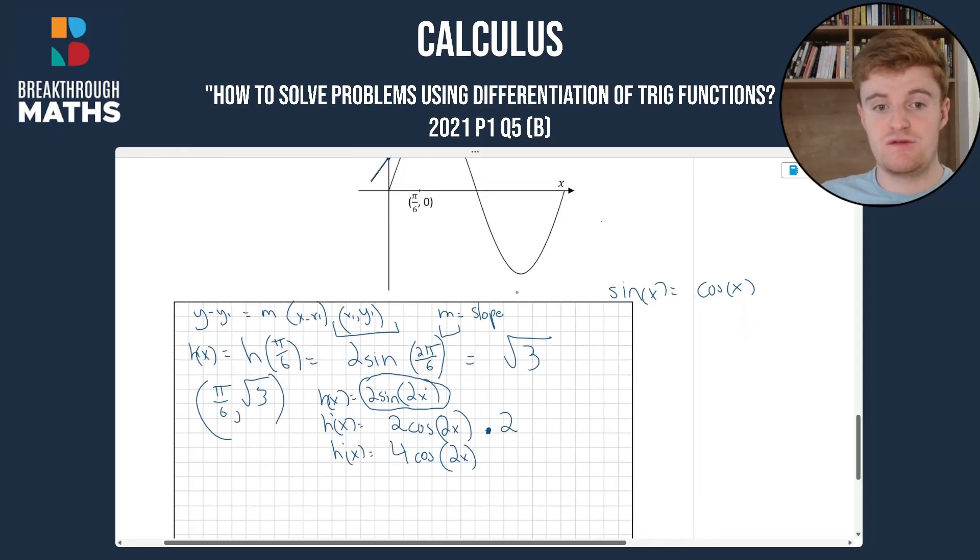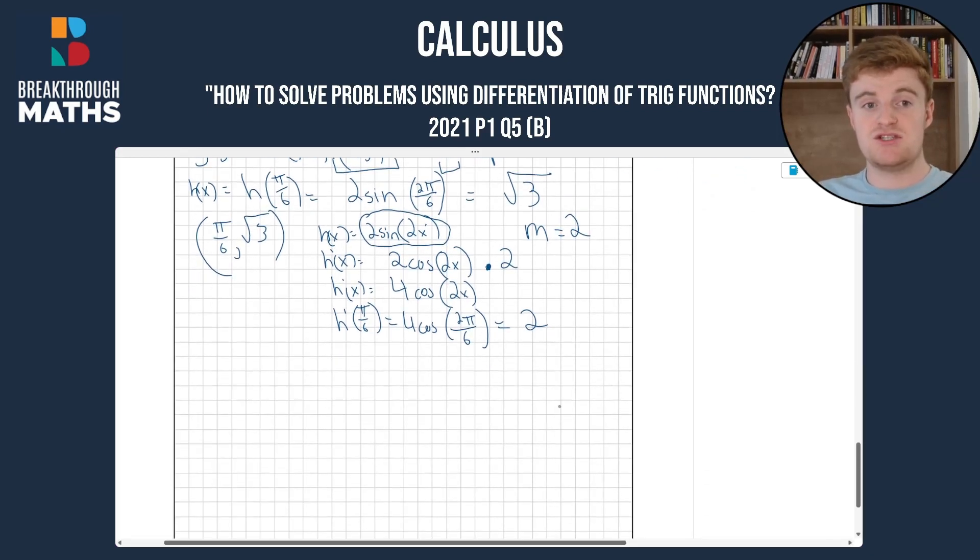So now that we have the derivative of h(x), we can plug in π/6. So we'll have h'(π/6) = 4cos(2π/6), which will give you 2. So now we know the slope m = 2. Now we can try to write the equation of the line t.